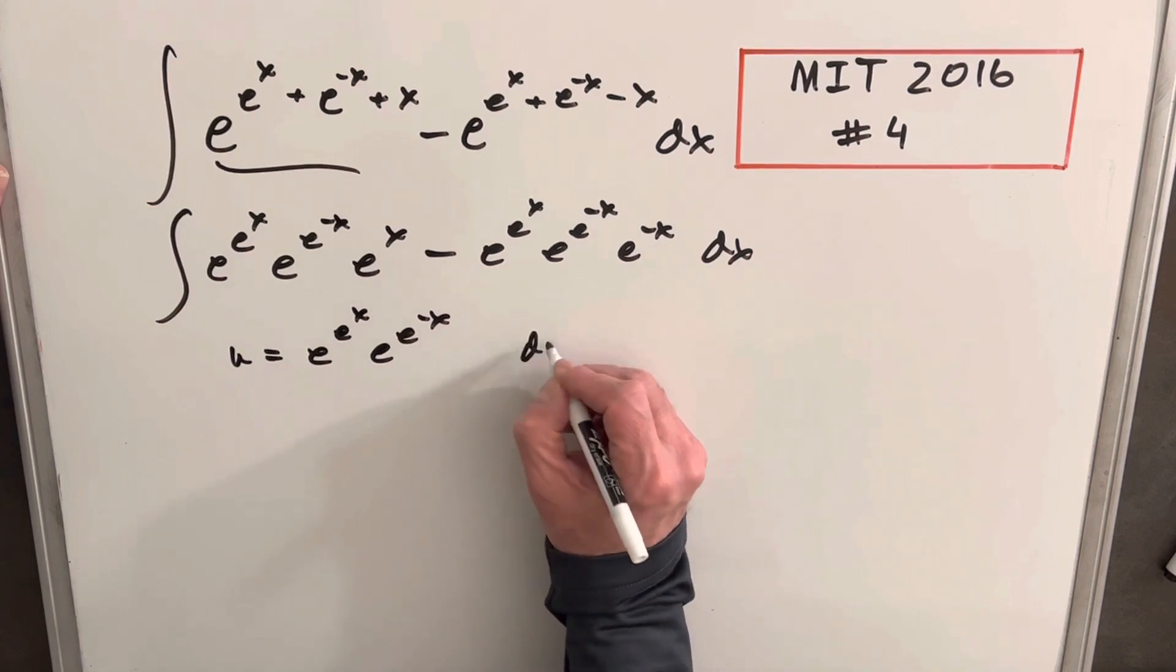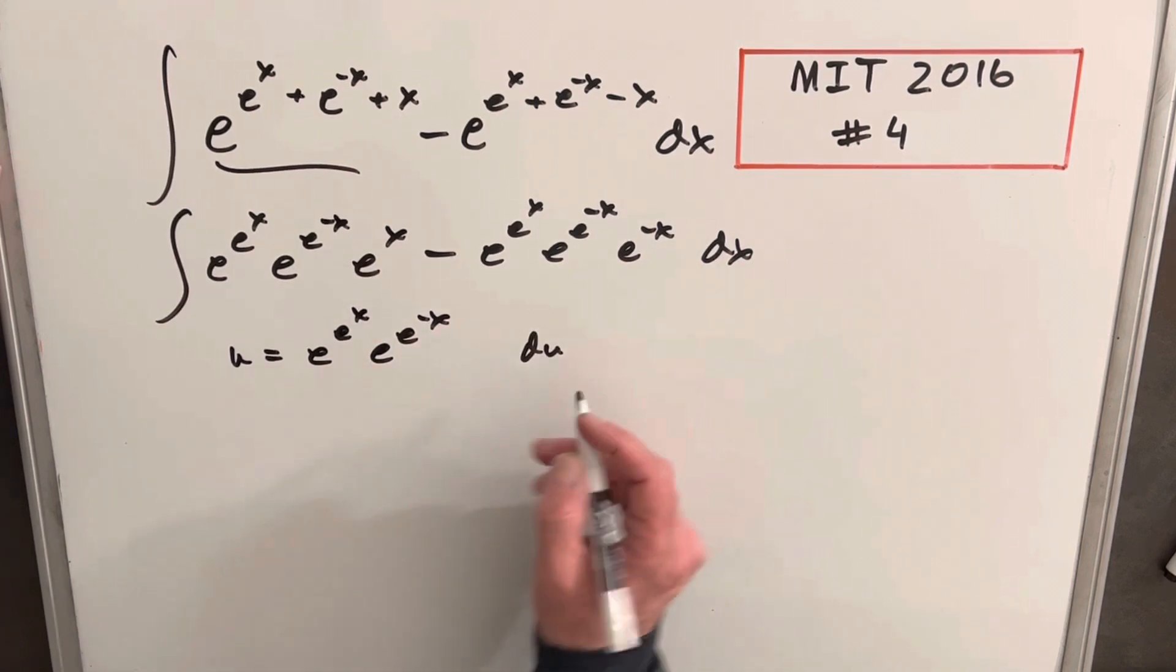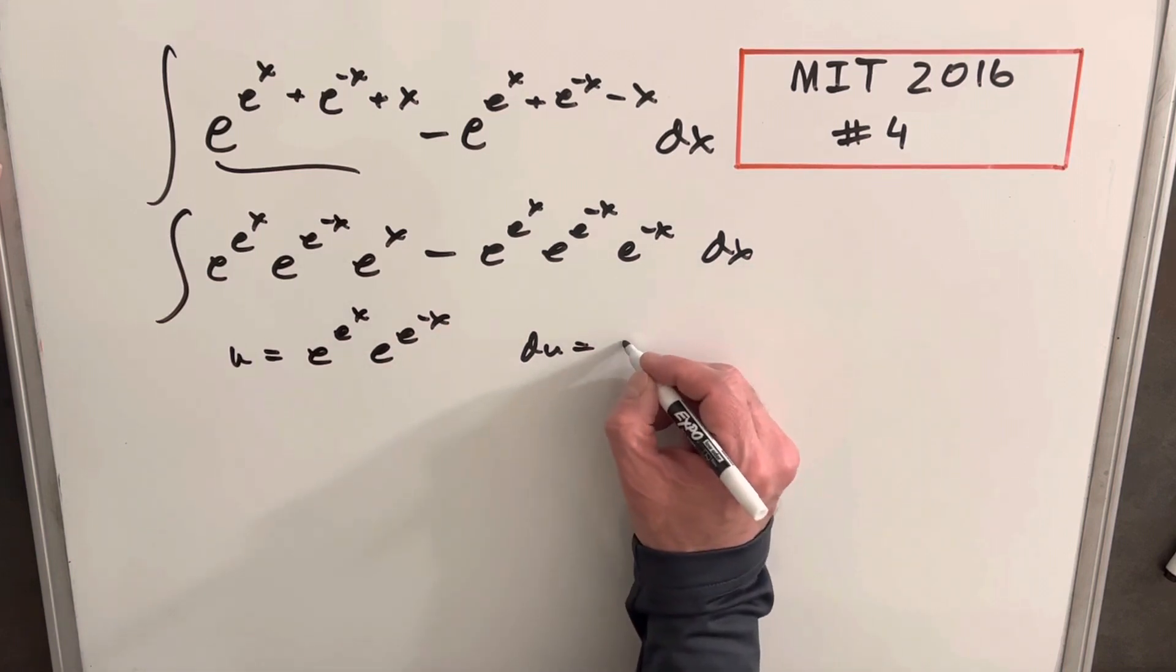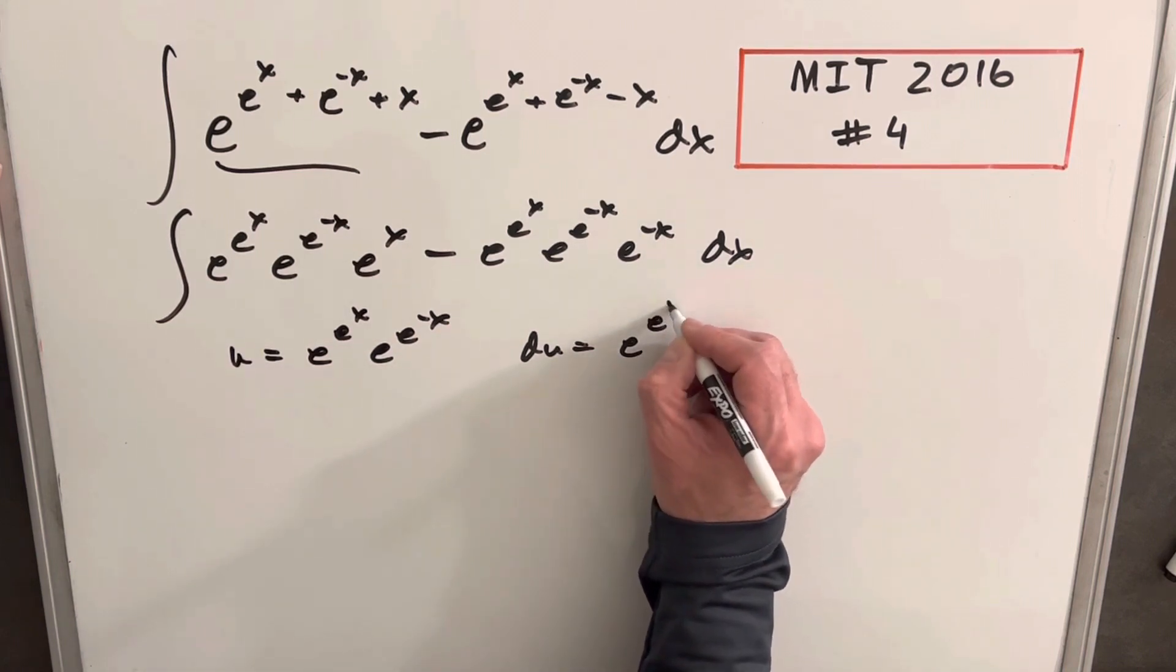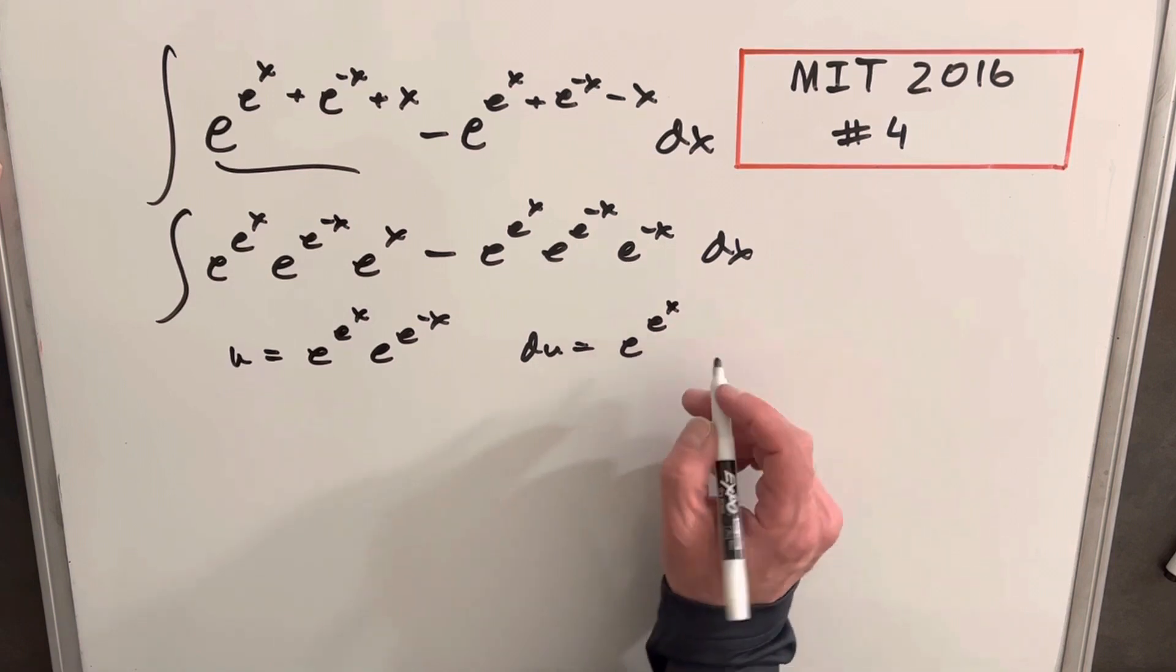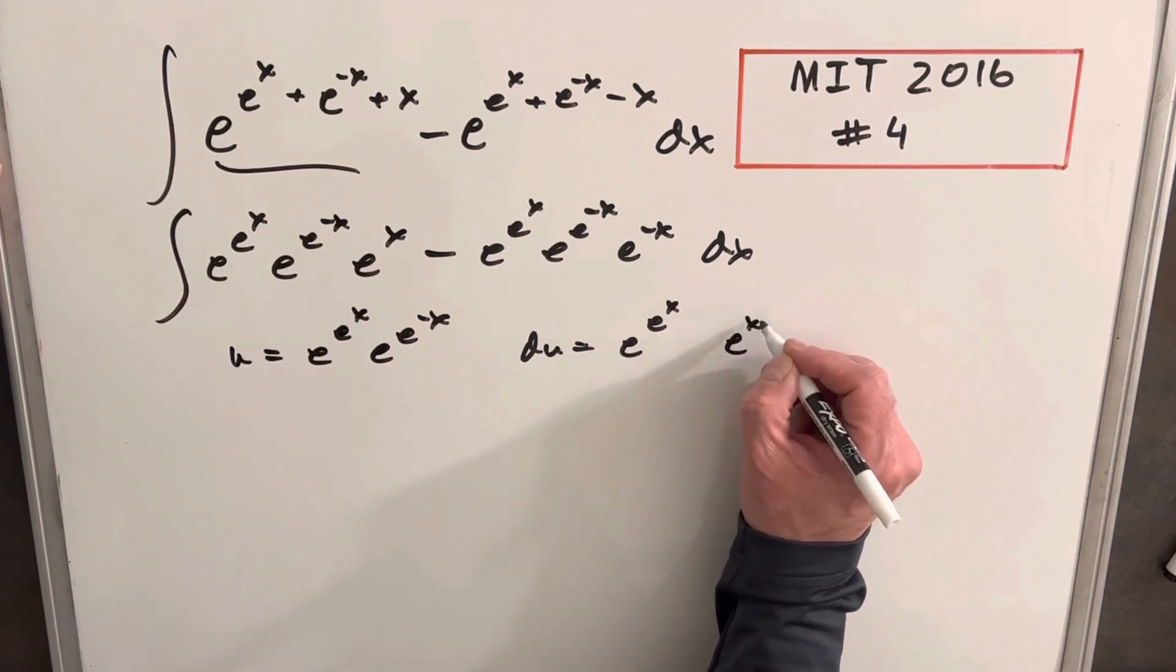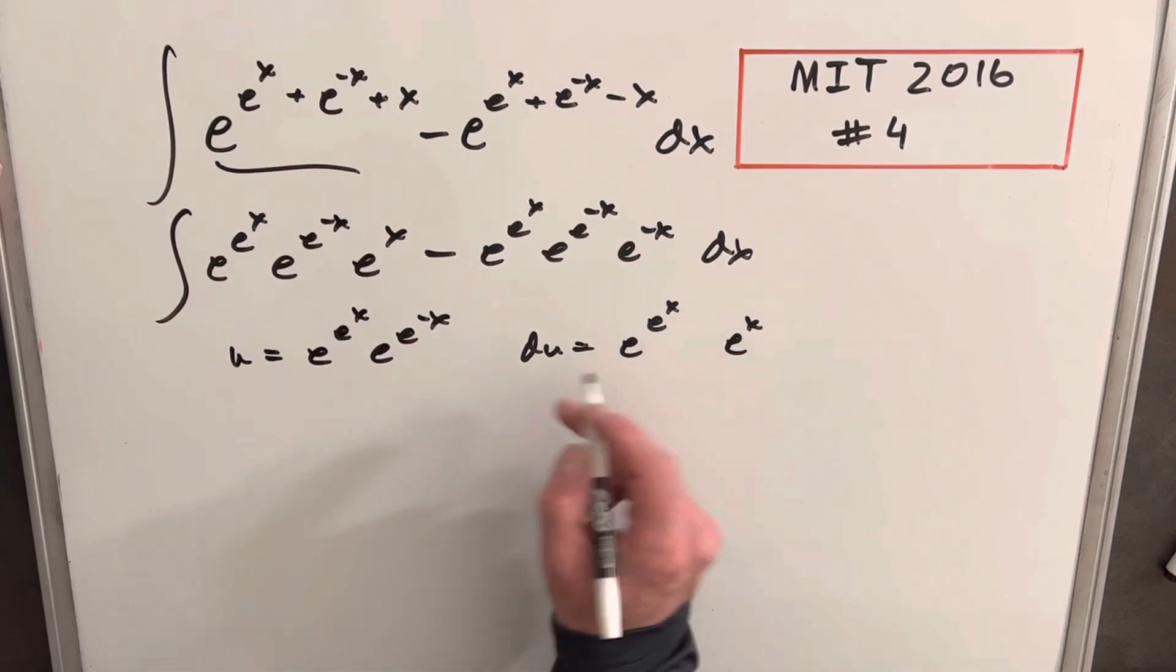So doing that, and again of course because we got two things we're going to be using the product rule. So we'll get the derivative of this first term is going to be e to e to the x, but then we need to use the chain rule and we'll get an e to the x, which I'll put there. And then we just keep this term, so we have e to the e to the minus x plus.